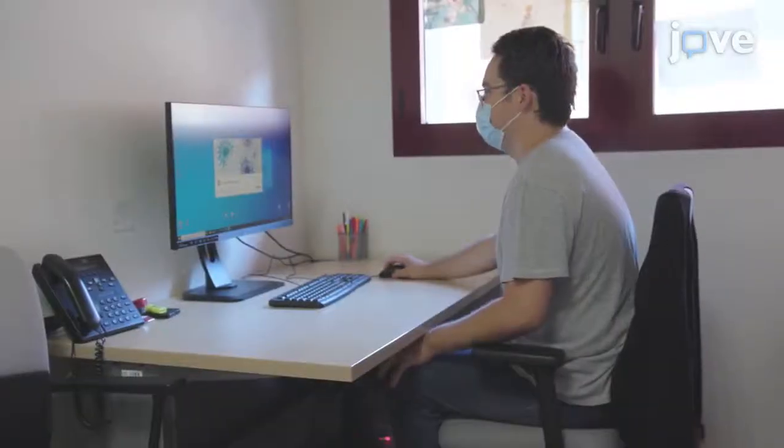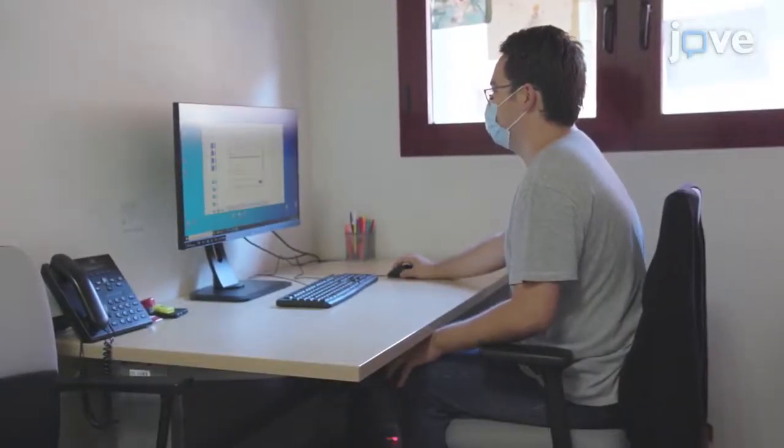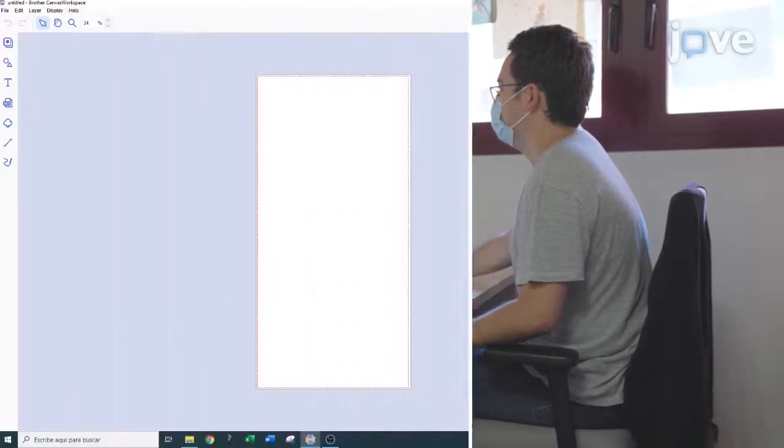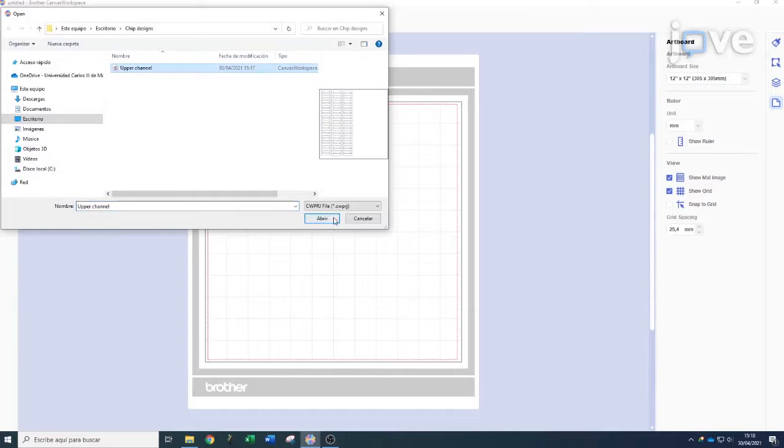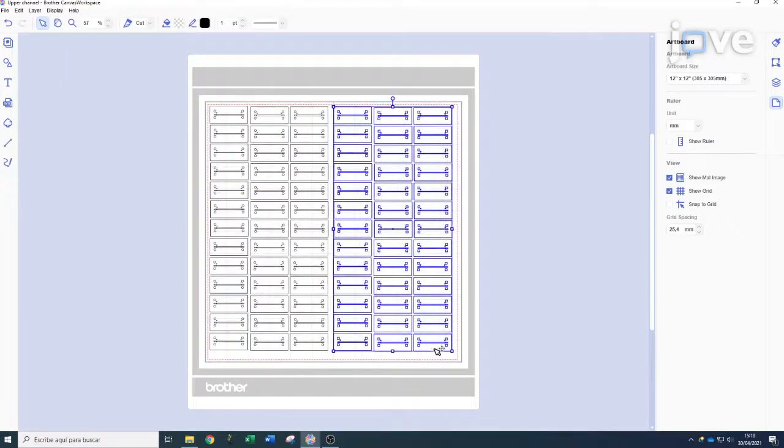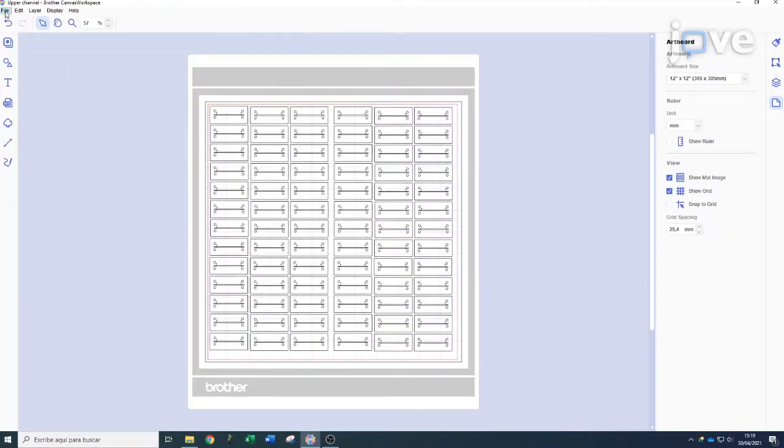Begin by designing a microfluidic chip using Brother Canvas Workspace software. Create a 30 x 30 cm workspace and fill it with the design patterns for the different layers of the chip before storing it in a .svg file.